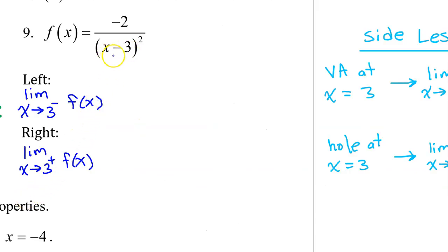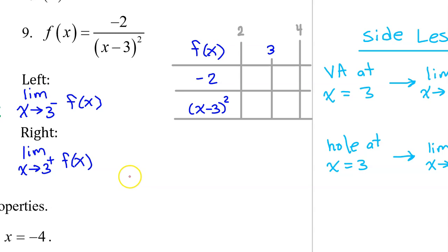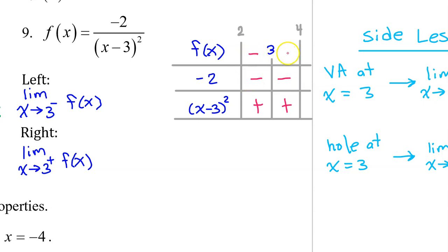For number 9, the x minus 3 in the denominator does not cancel out, so there is a vertical asymptote at x equals 3. The limits from the left and right will be either positive or negative infinity. Making a sign chart near 3: negative 2 is always negative on both sides; squaring something always gives a positive or zero result, so that factor is positive on both sides. The overall sign of f(x) is negative from both the left and the right, so the limit as x approaches 3 from the left and from the right is negative infinity.